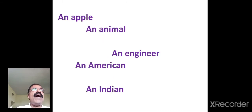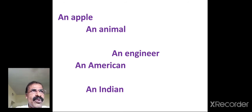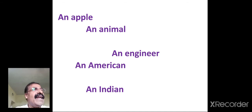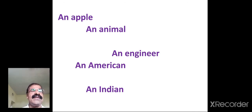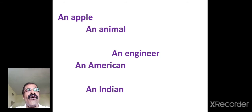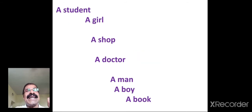An apple could be any apple. An animal — I haven't told you anything about the animal; which animal it is, you don't know. An engineer — what kind of engineer? We don't know. An American could be any American. An Indian could be any Indian. So these are all used in their general sense.